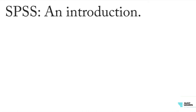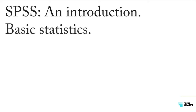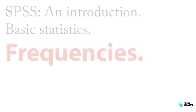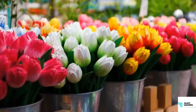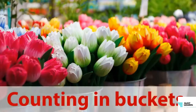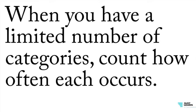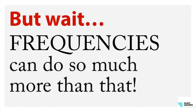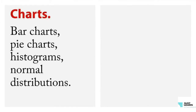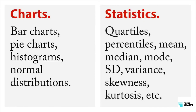Once you've done the basic graphics and seen what you're dealing with, it's a good idea to move on to basic statistics. In SPSS, the most basic version of this is frequencies — think of it as putting things into buckets and counting what's in the buckets. When you have a limited number of categories, you just count how often each occurs. But the frequencies command in SPSS can do so much more: it can do charts — bar charts, pie charts, histograms, and normal distributions — and statistics beyond frequencies: quartiles, percentiles, mean, median, mode, standard deviation, variance, skewness, kurtosis, and so on.